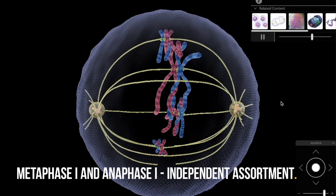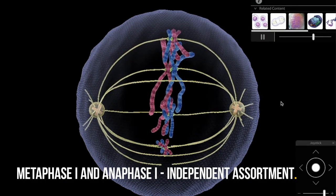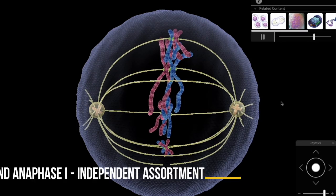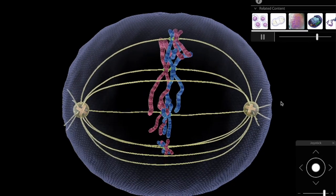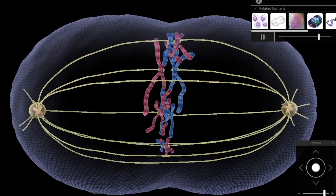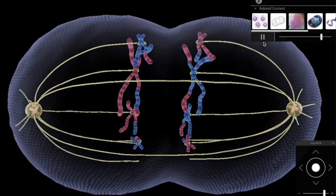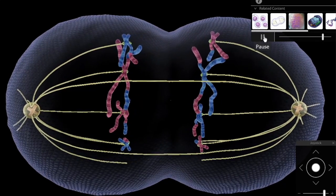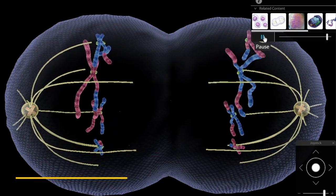During metaphase 1, all the tetrads line up in the middle of the cell. However, the way they are arranged during this step determines which sets of sister chromatids get pulled into each daughter cell during anaphase 1. This is called independent assortment.